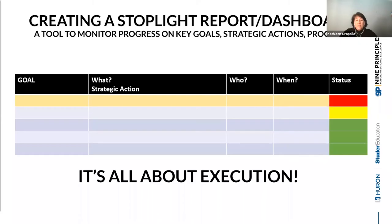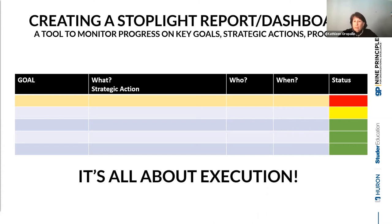It promotes individual accountability when we're executing a plan. If you look at this simple example of a stoplight, you're going to see some familiar things — a goal, an action, a who, and a when. Traditionally we have a place to check whether we've accomplished an action, but a stoplight allows us to use green, yellow, and red to look at the degree by which we're working towards an action and a goal.